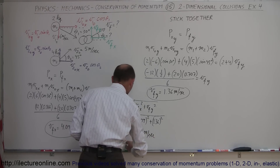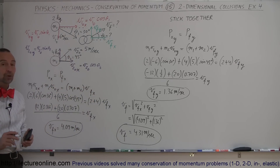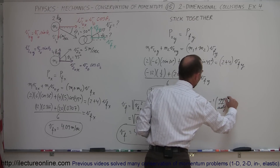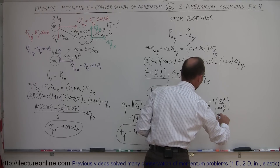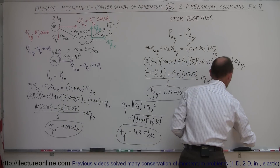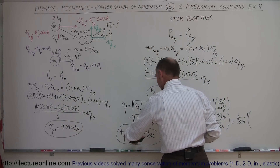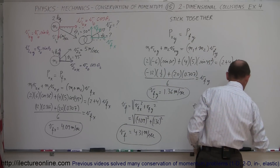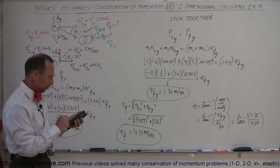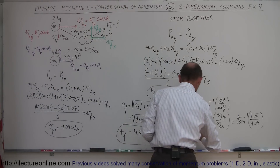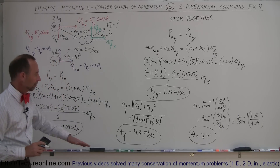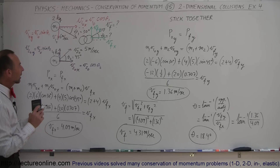Now we still need to find the angle relative to the horizontal. Theta equals the arctangent of the opposite side over the adjacent side, which is v final in the y direction divided by v final in the x direction: arctan of 1.36 divided by 4.09 equals 18.4 degrees. So the final velocity is 4.31 meters per second at 18.4 degrees relative to the horizontal — that's the direction the two objects move together after the collision.